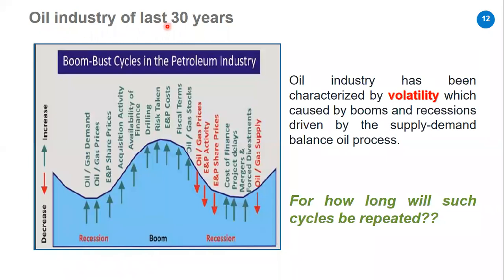As a conclusion on the oil industry over the last 30 years: the oil industry is volatile — we don't have stable conditions, we always have recessions and booms. In a boom, oil and gas demand increases, prices increase, share prices increase, availability of finance increases, drilling activity increases, risk-taking increases, costs increase, and fiscal terms change. Then in a recession, oil prices decrease, activity decreases, share prices decrease, the cost of finance increases, and companies may be forced to merge. Oil and gas supply decreases. This boom-bust cycle repeats every number of years.